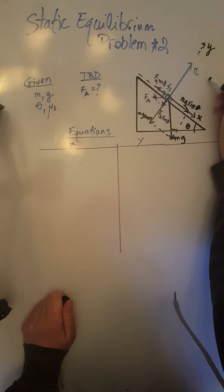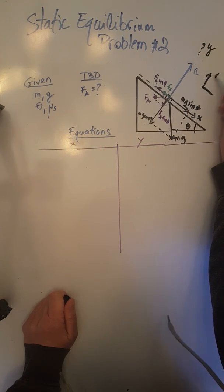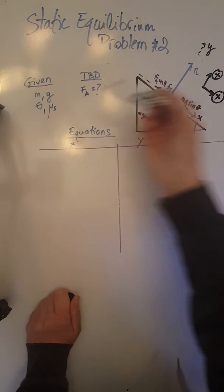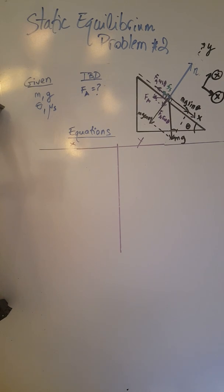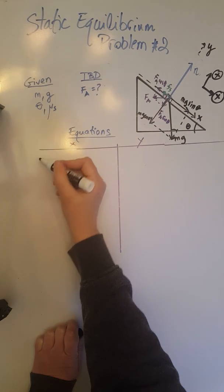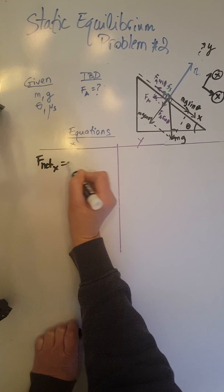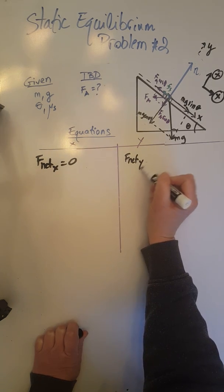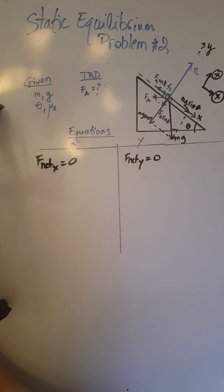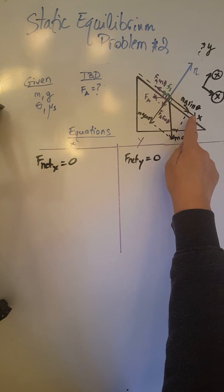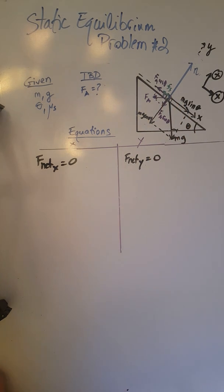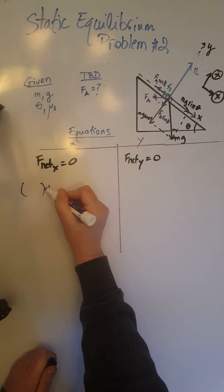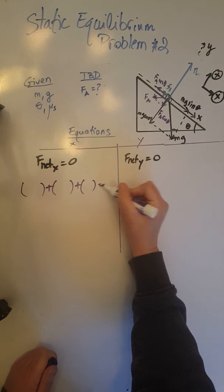The magnitude check is now done. Let's pick our positive directions: upward along the y-axis and down the ramp along the x-axis. The givens are mg, theta, and mu_s, and we need to determine the magnitude of the applied force F_a. Since the object is in static equilibrium, both F_net_x and F_net_y must equal zero. Starting with the x forces, we have one force down the ramp and two forces up the ramp — a vector sum of three forces equal to zero.